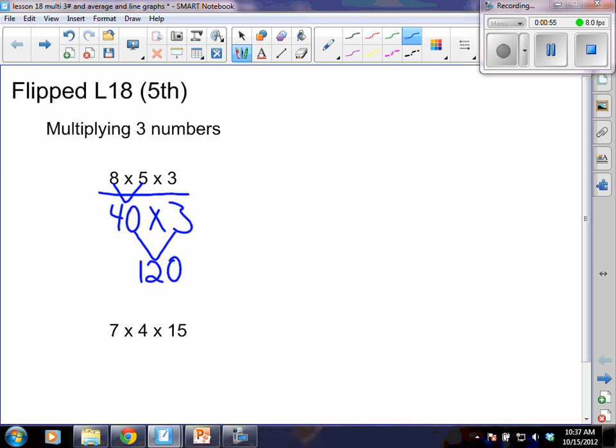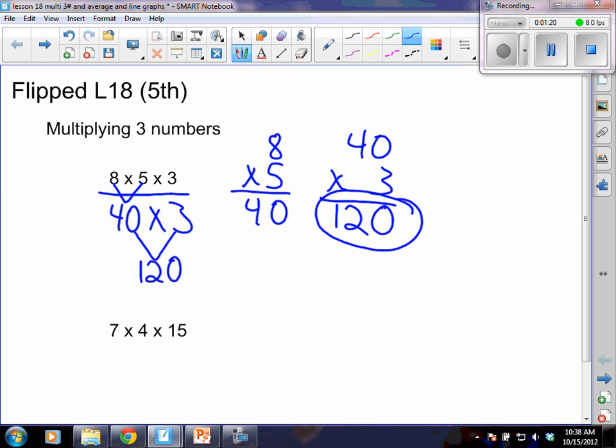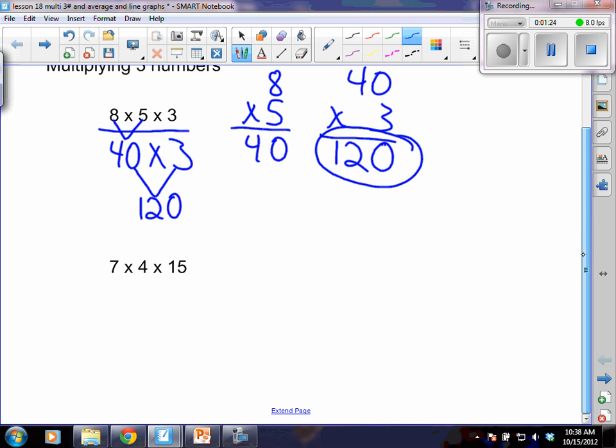Now if working horizontally is not your forte or is not the way you understand it best it is okay to change it to the vertical so that you see it like this to get you to 40 and then you can even rewrite it again to solve the second part to get to your 120 for your final answer. So we have a first look at multiplying three numbers.